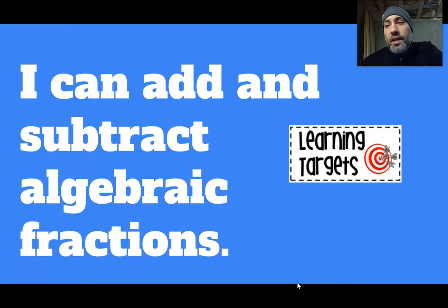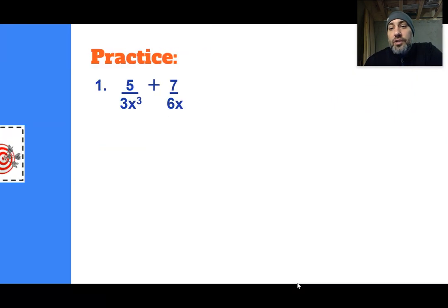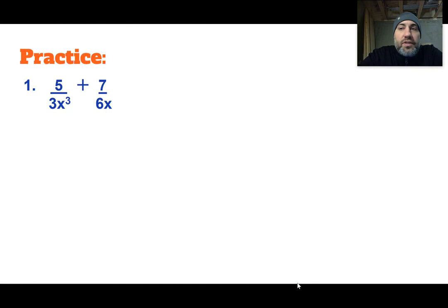So I can add and subtract algebraic fractions is our I can statement. Obviously we're going into the unlike denominators and we know when we add fractions that are unlike denominators, we have to get the denominator to be the same. And that's what makes this lesson a little challenging. So we'll start with this one here. To be able to add these two fractions together, we have to make the denominators the same. So how do we do that?